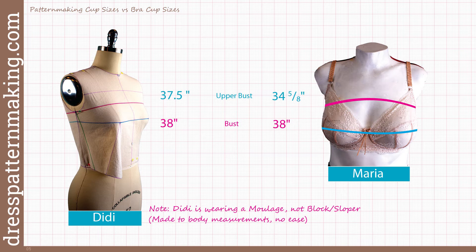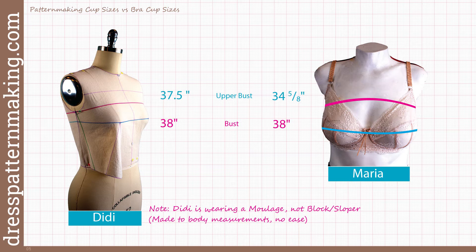Someone new to sewing or pattern making who wants to buy a dressmaker's dummy might buy it according to bust size. If they had my type of body and did that, they'd be in trouble: a close-fitting woven garment wouldn't zip up on the form, and if made to fit the form it would gape in the upper bust and armhole area. If the form is not adjustable, you need to choose it according to your upper bust measurement, but most sellers don't include that specification.